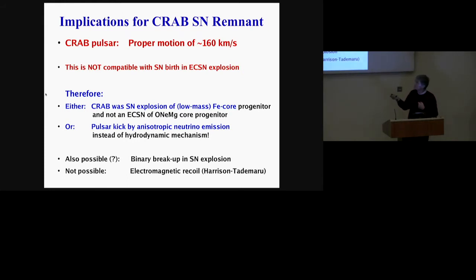So what kicks the neutron star? Maybe it's not a hydrodynamic mechanism, but anisotropic neutrino emission. That's a completely different scenario, not excluded, but requires exotic neutrino physics to get up to 160 kilometers per second. Or the other possibility maybe is a binary breakup of a system where the explosion was connected to one of the components, and the velocity which we see for the neutron star is the breakup velocity of the binary system.